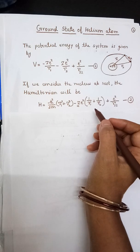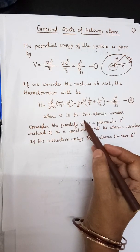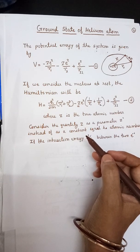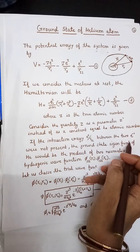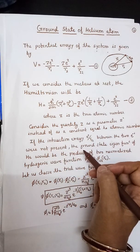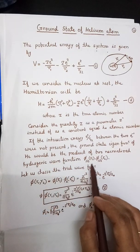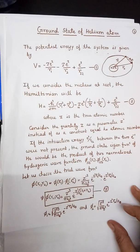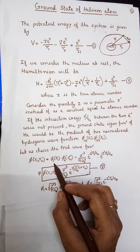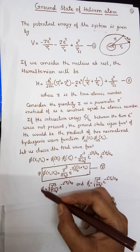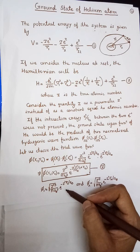In the variation method, the accuracy of the energy calculation is greatly increased by treating Z as a variational parameter Z′ instead of a constant equal to the atomic number. If the interaction energy e²/r₁₂ between the two electrons were absent, the ground state eigenfunction of helium would be the product of two normalized hydrogenic wave functions φ₁₀₀(r₁)φ₁₀₀(r₂). So we choose a trial wave function φ(r₁,r₂) as a product of two hydrogen-like wave functions: φ = (Z′³/πa₀³) e^(−Z′r₁/a₀) · e^(−Z′r₂/a₀).